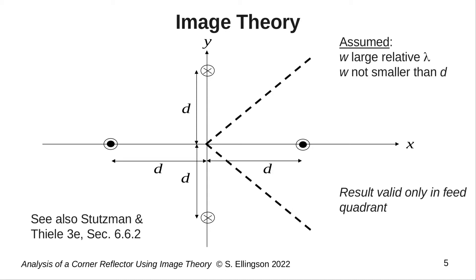Not indicated here, but important to know, is that the magnitude of the current on each of the additional line sources is the same as that for the feed. Together, these three additional sources account for all the possible reflections when the vertex angle is 90 degrees.